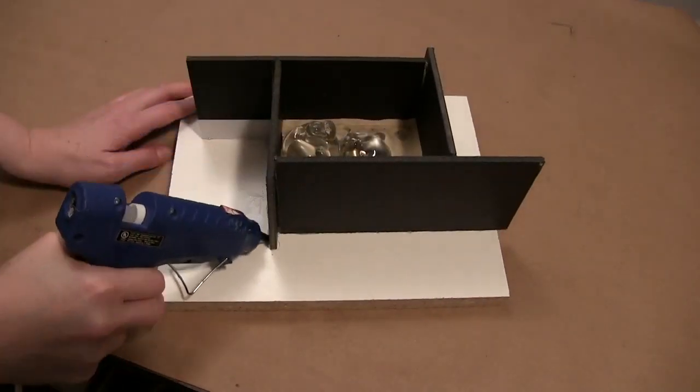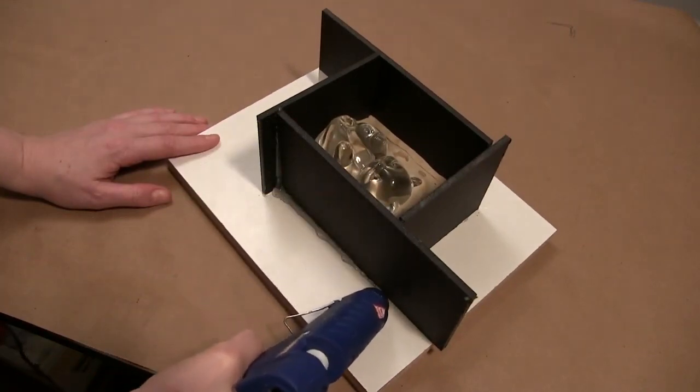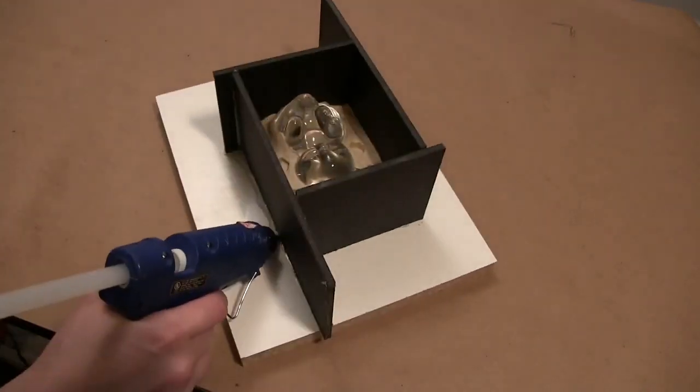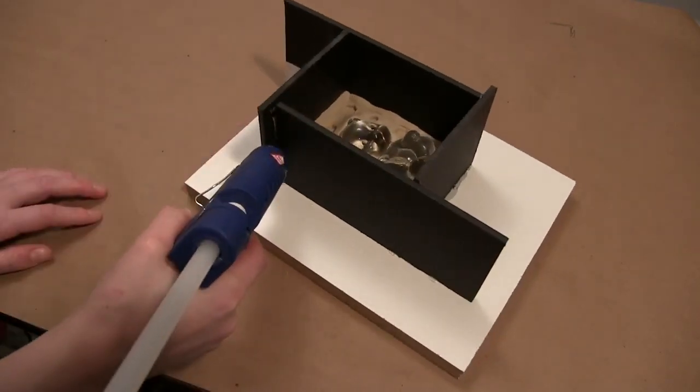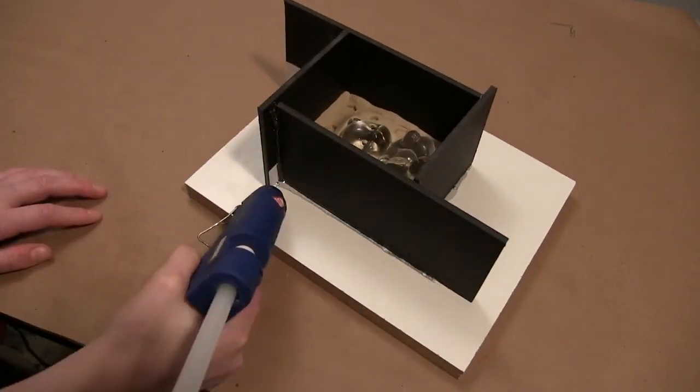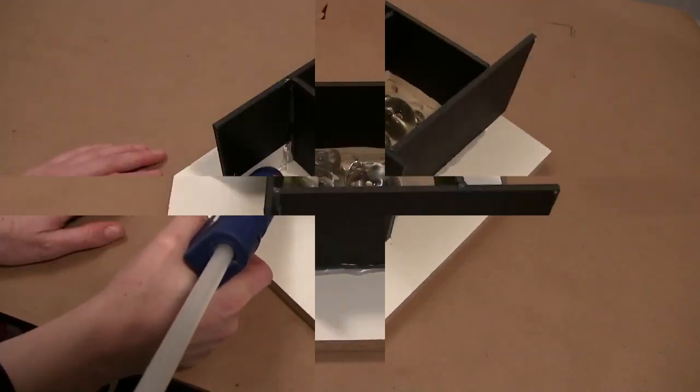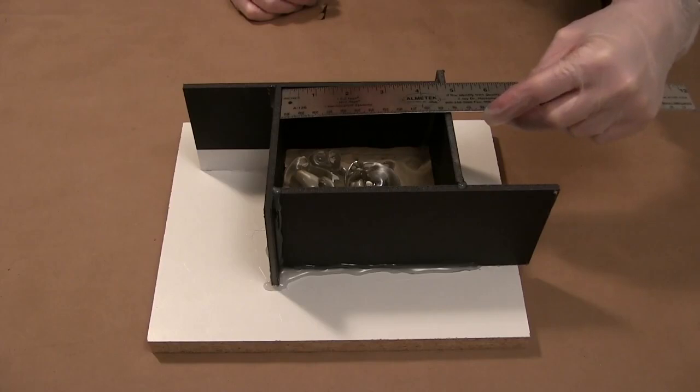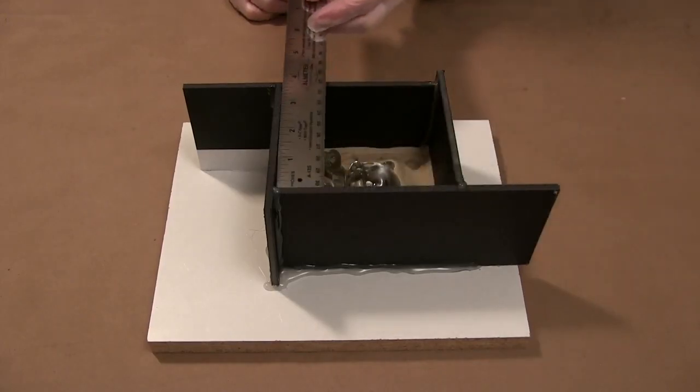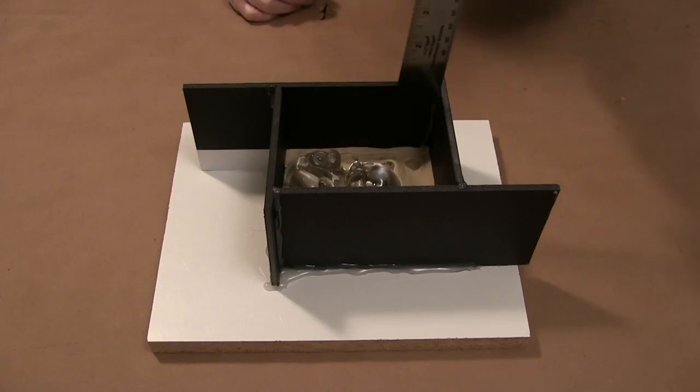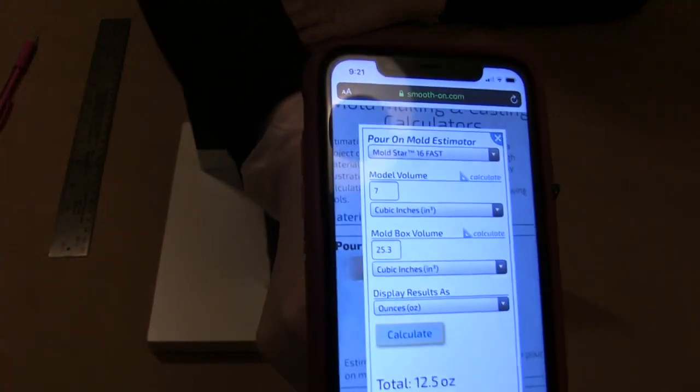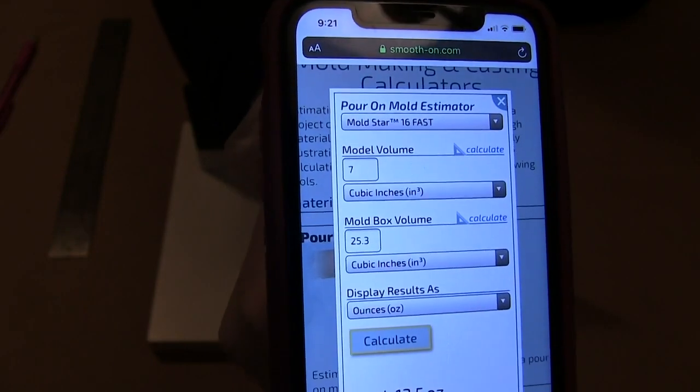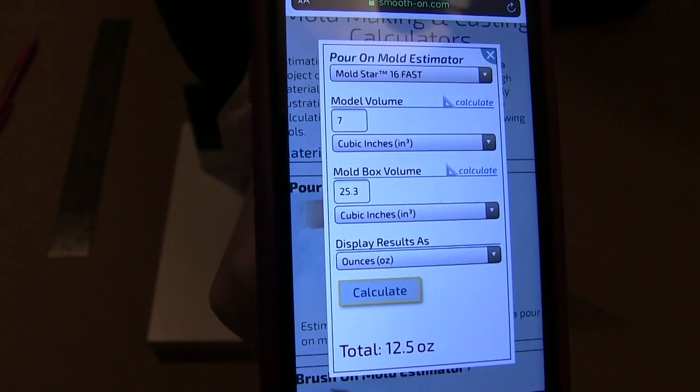The next step here is to really reinforce all your seams with more hot glue. So I'm going around the bottoms, the edges, sealing up any little nooks and crannies. The silicone will leak out of even the tiniest of pinholes, so go around a couple times if you have to. Now I'm going to be measuring my mold box. I have the dimensions of my model and my mold box, so I can determine how much silicone I will need to dispense. I like to use the online calculator found on the Smooth-On website, where I can plug in the dimensions and it tells me the total amount that I need.